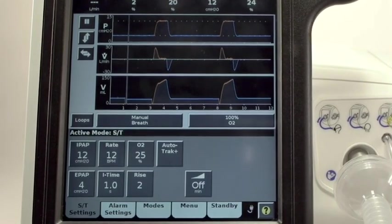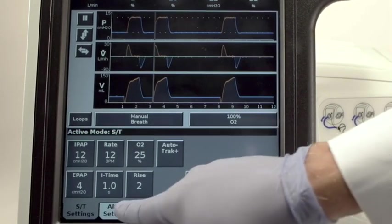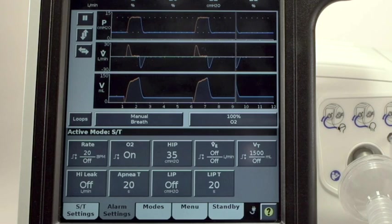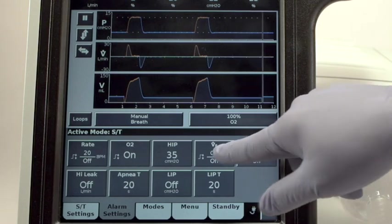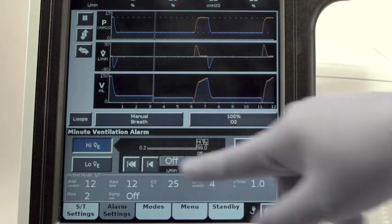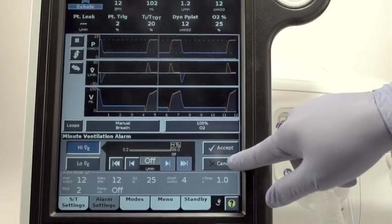Alarm settings are changed the same way as ventilation settings. Touch the Alarm Settings button. Each alarm parameter displays the current setting or settings. Alarm parameters that have a high and a low setting have those values represented above and below one another. Touch the Rate Alarm and select High Rate.